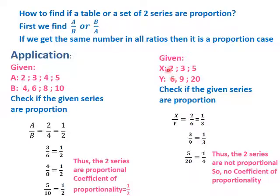Another example. Series x is 2, 3, 5 and series y is 6, 9, 20. We are going to check if the given series are proportion by finding x over y. The first ratio is 2 over 6, which simplifies to 1 over 3. The second ratio is 3 over 9, which simplifies to 1 over 3. And the third ratio is 5 over 20, which simplifies to 1 over 4. Thus, the two series are not proportional since the answers are not the same. So, we do not have coefficient of proportionality.